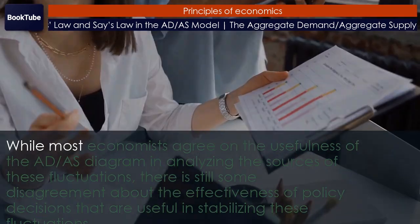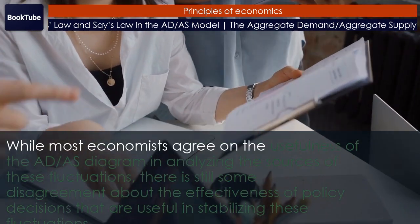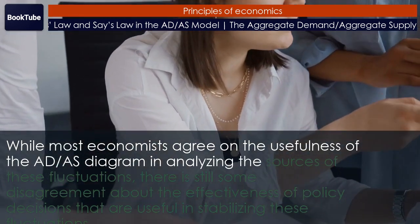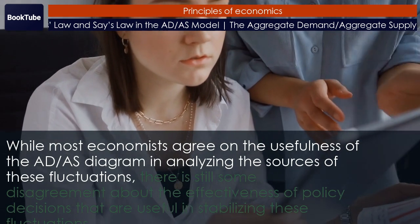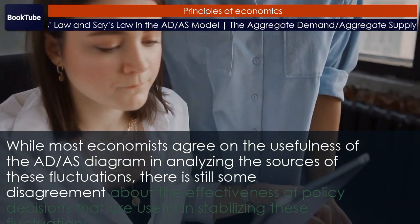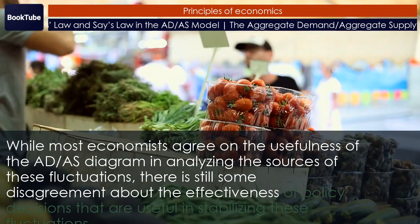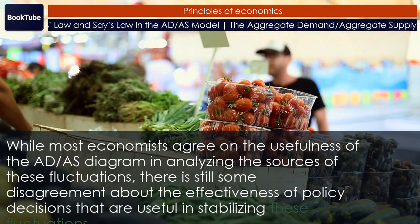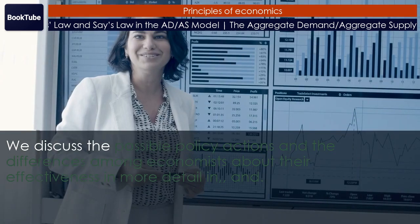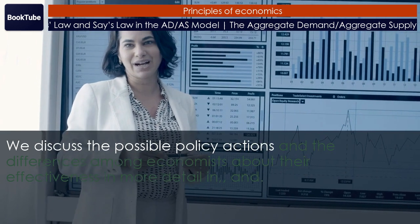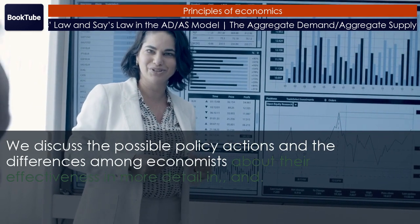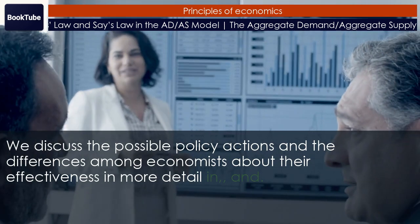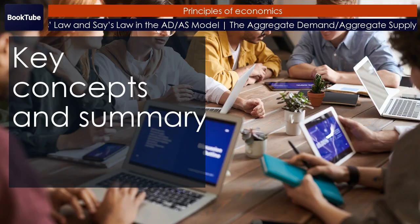While most economists agree on the usefulness of the AD/AS diagram in analyzing the sources of these fluctuations, there is still some disagreement about the effectiveness of policy decisions that are useful in stabilizing these fluctuations. We discuss the possible policy actions and the differences among economists about their effectiveness in more detail in the key concepts and summary.